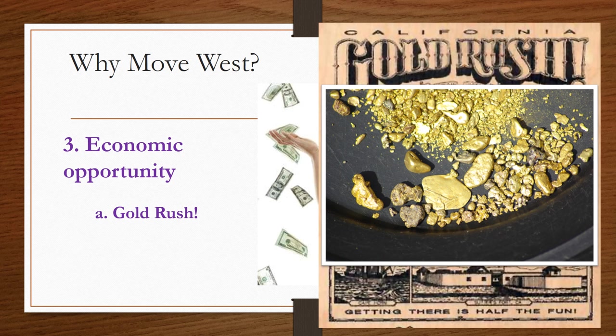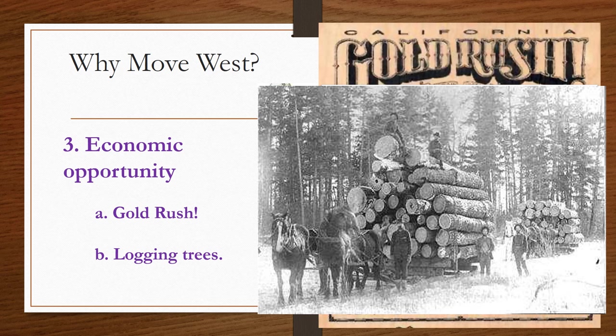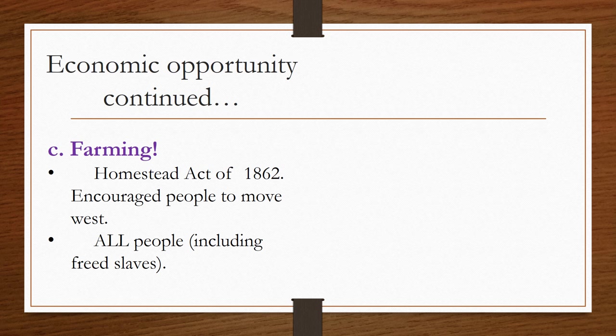That's why the 49ers are called such — because in 1849 gold was discovered and people loaded up to head to California for the California Gold Rush. Another natural resource providing economic opportunity was logging. There are a lot of forests out west, and people saw that if they logged trees and sold that timber, they would make a lot of money and provide for their families.